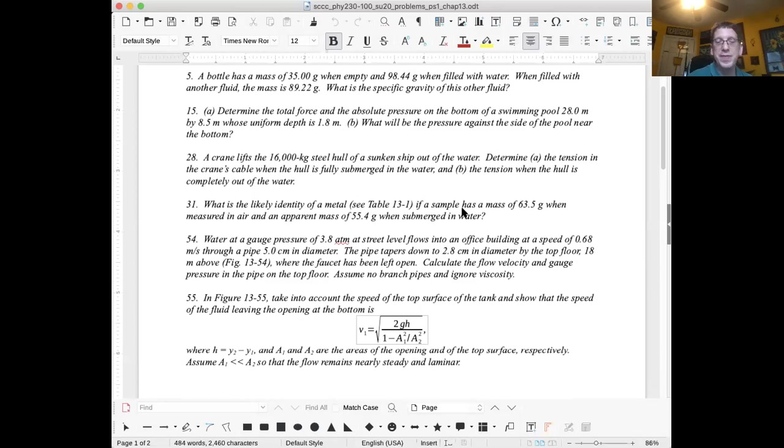The faucet has been left open. Where the faucet is left open, the pressure it's experiencing is the air pressure. You know the pressure at the bottom, that's the gauge pressure. And you know the pressure at the top, that's the air pressure. You're asked to calculate the flow velocity and gauge pressure in the pipe on the top floor. You use the continuity equation to figure out the flow velocity.